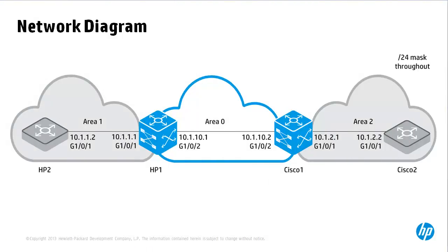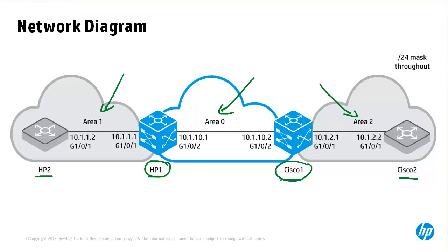In this video we have a topology consisting of four switches. Two switches, HP1 and HP2, running the Comware operating system, are going to be configured in area 1. Two Cisco switches running Cisco IOS are going to be configured in area 2. HP1 and Cisco 1 are going to be configured as ABRs, or area border routers, and also configured in OSPF area zero. Once completed we should have full connectivity in this network. A network mask of /24 is used throughout this topology.